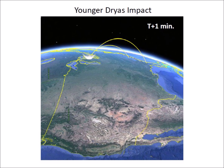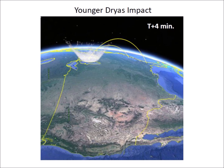The extraterrestrial impact on the ice sheet at Saginaw Bay ejected pieces of glacier ice in suborbital ballistic trajectories. The excavation of the ice sheet and the ejection of glacier ice pieces lasted approximately 30 seconds. The first pieces of ice ejected had speeds of 4 kilometers per second and reached heights of 370 kilometers,